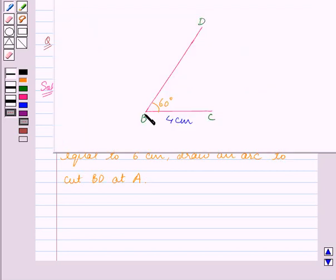We draw this arc and this point where this arc cuts BD is the point A.